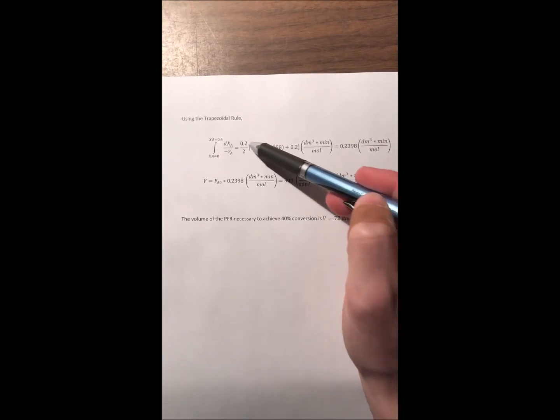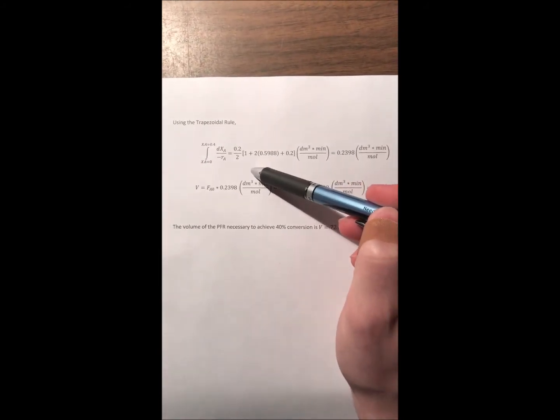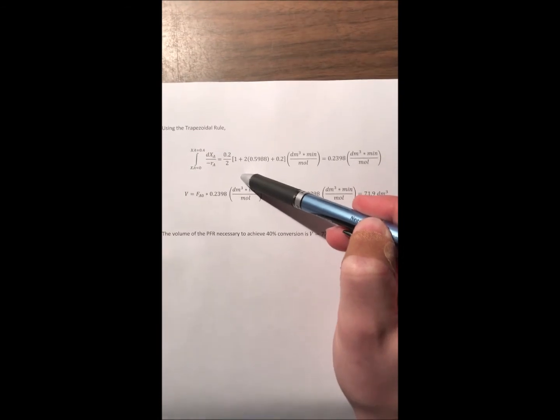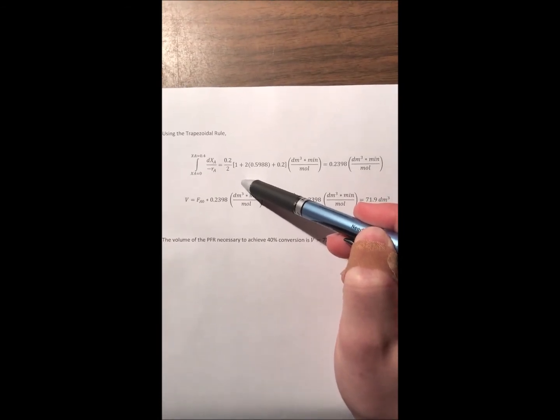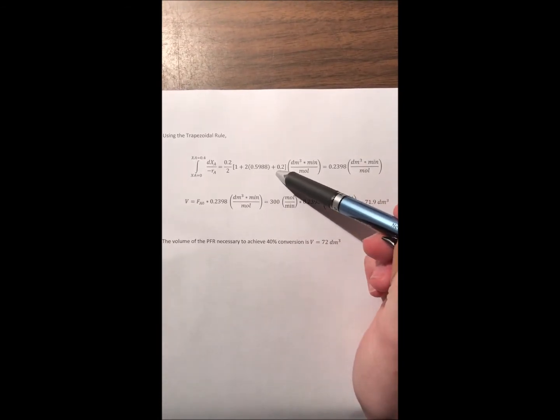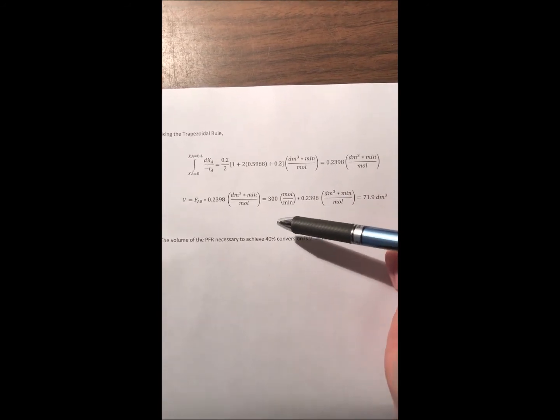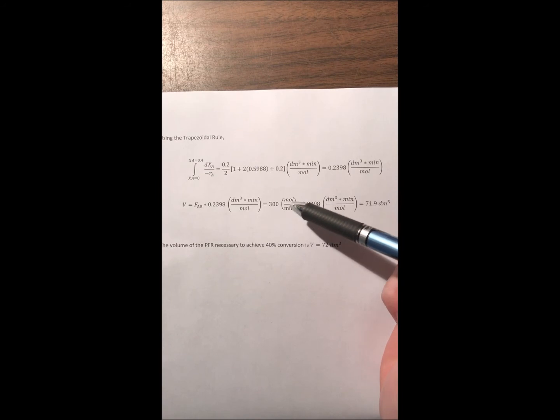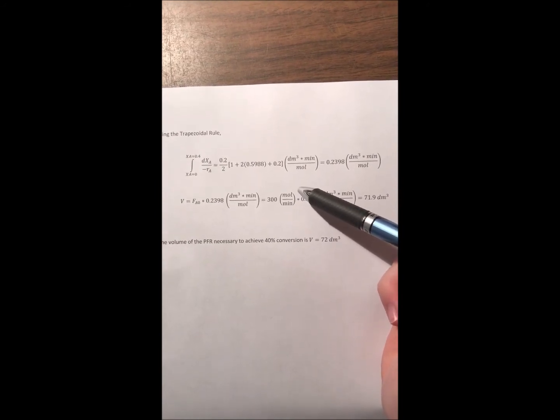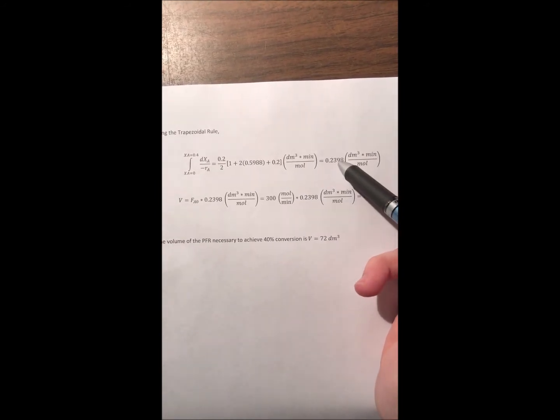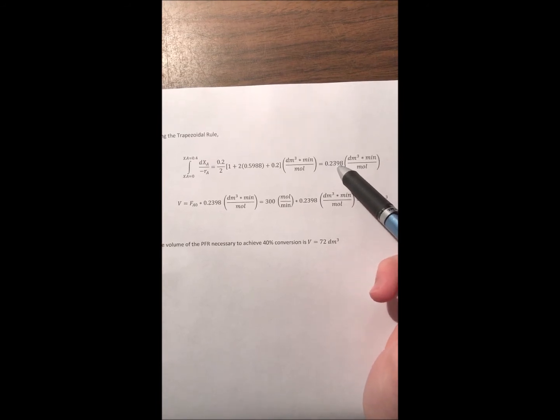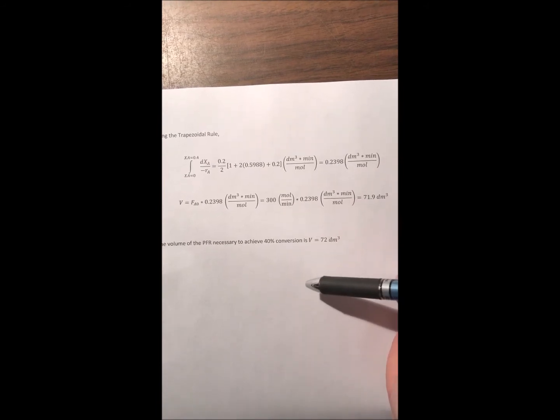Now to use the trapezoidal rule we can see that 0.2 is our delta x for our equation. And then these three values here are the different functions of our conversion. Adding those together and multiplying by 0.2 divided by 2 gets us 0.2398 decimeters cubed times minute over mole.